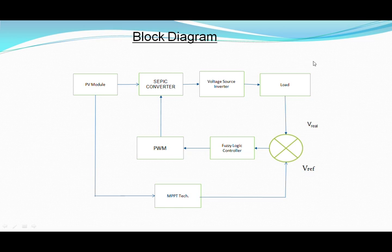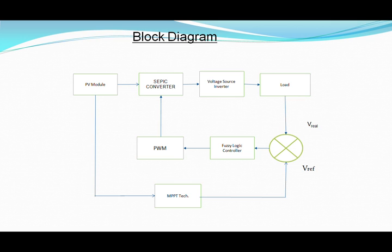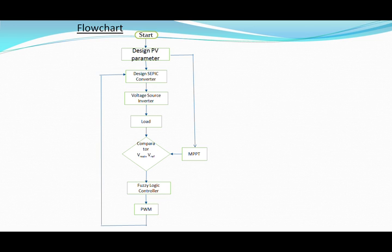Here is the block diagram of our model. It shows the PV module, and the output of the PV module is given to the SEPIC converter. The SEPIC converter boosts the output voltage and gives it to the inverter, which converts DC to AC and supplies the load. From the load, we take V-real to the comparator. From the comparator, it is given to the fuzzy logic controller, which gives the signal to the PWM generator. The PWM generator creates the duty cycle, which is fed back to the SEPIC converter for maximum power point tracking.